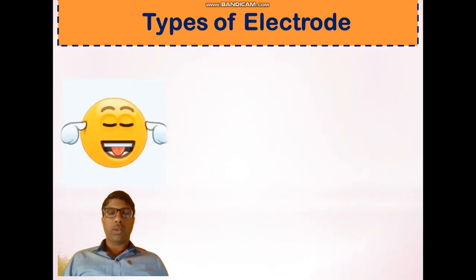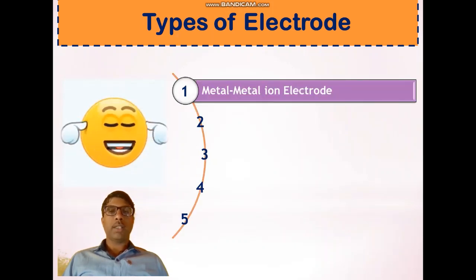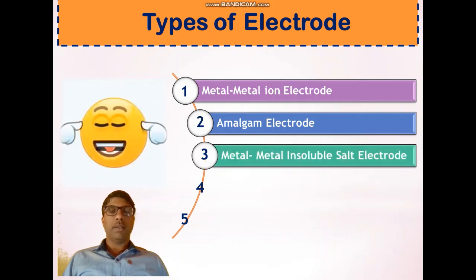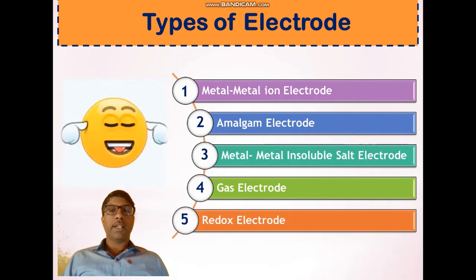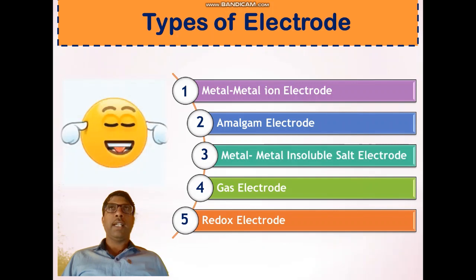Also, electrodes are found in batteries and storage batteries. There are five types of electrodes: first, metal-metal ion electrode; second, amalgam electrode; third, metal-metal insoluble salt electrode; fourth, gas electrode; and fifth, redox electrode. These are the basics of any electrochemical cell, electrolytic cell, or battery.